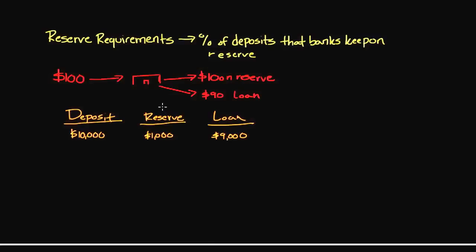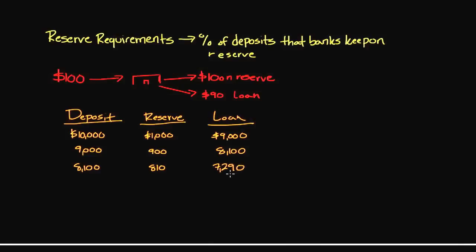Let's follow this through for a couple of lending cycles. The $9,000 makes it back to a bank, which is going to hold $900 on reserve and then loan out $8,100. One more lending cycle: somebody takes out that $8,100, and according to the 10% reserve requirement, we hold $810, which means we can loan out about $7,290. Simply from this $10,000 initial deposit, look at how much money we've created — and that's how banks create money.